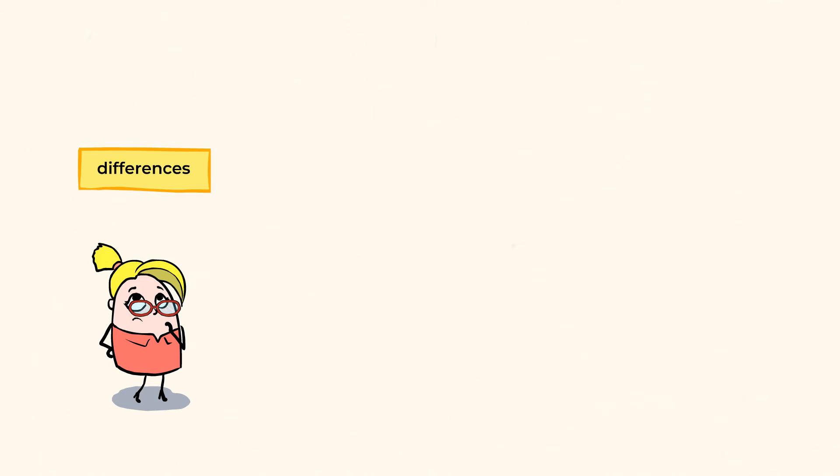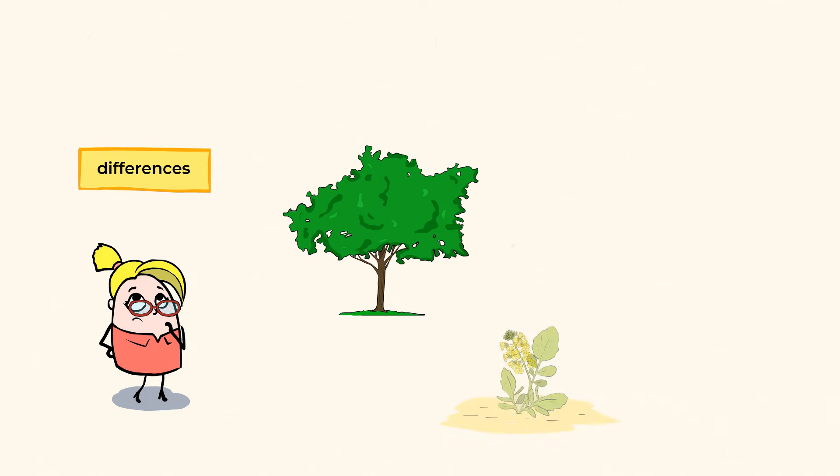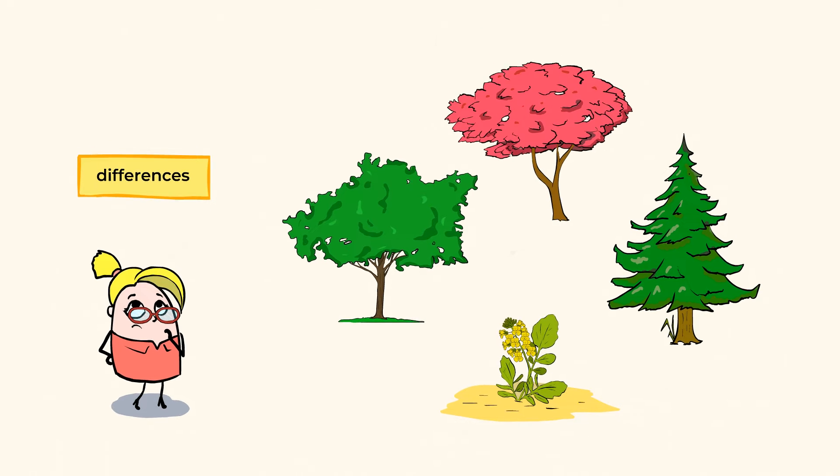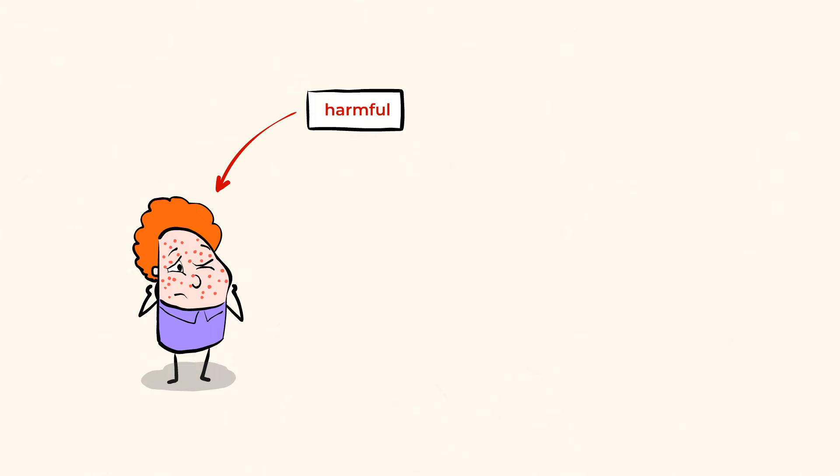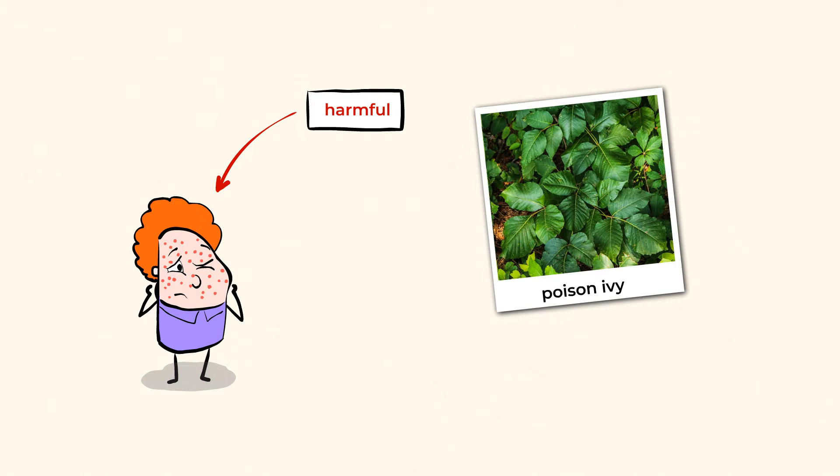What about the differences then between the different kinds of plants? It's true. They come in all sizes, shapes, and colors. Some of them can even be harmful to people. Take, for example, poison ivy.